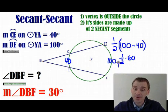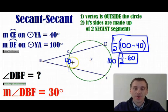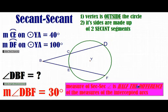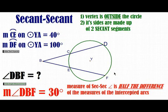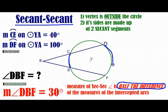The measure of the secant-secant angle is half the difference of the two intercepted arcs. Circle it, highlight it — that's the key formula. It works every single time: half the difference of the intercepted arcs. Take the two arcs the secant sides cut off, subtract them, then take half. For example, with arcs of 10 and 100: difference is 90, half of 90 is 45.